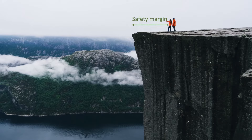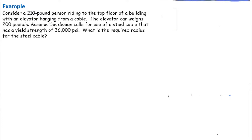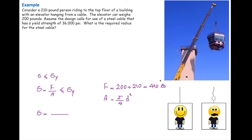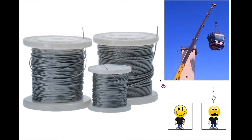Assume you are riding in a man-made elevator consisting of a car and a cable holding that car. We want to determine what would be the required diameter for the cable to carry the load. The design equation says stress should be smaller than the yield stress: sigma < sigma_y. Sigma is force divided by area — the force is 200 plus 210, so 410 pounds total. The area of the cable is pi/4 times diameter squared. Plugging in the values with a yield stress of 36,000 PSI, solving for diameter gives 0.12 inches — something like a tiny wire. Are you going to put your life on this tiny wire going hundreds of feet above the ground?